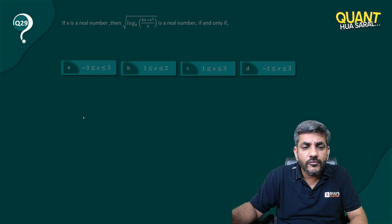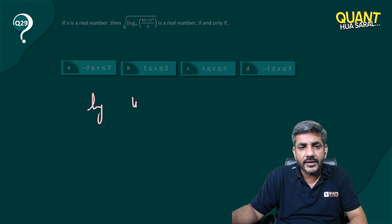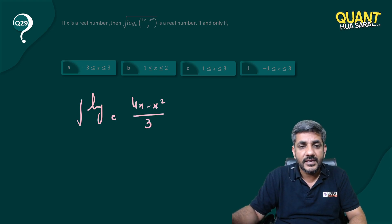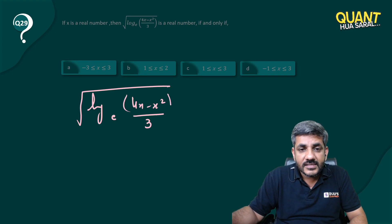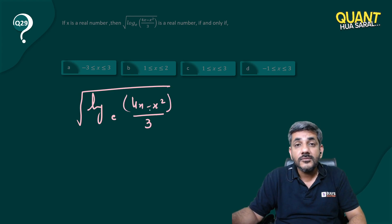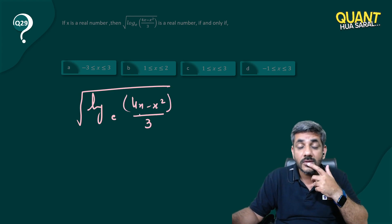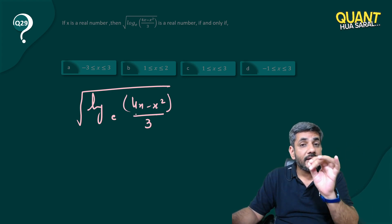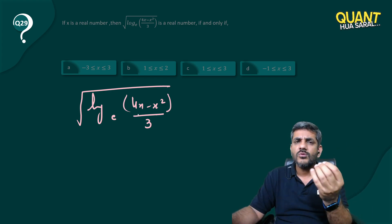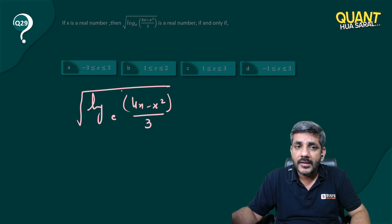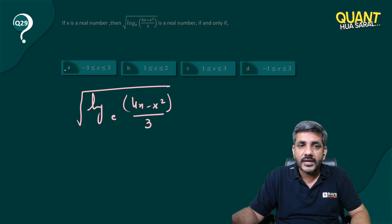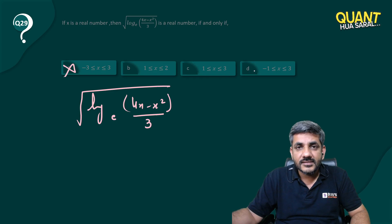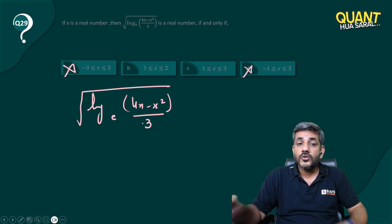Clearly, I can see that the expression is log of (4x minus x squared) divided by 3, with base e. If x is zero, this numerator becomes zero, and you have log of zero — which is not defined. So I cannot take x as zero. Zero is the first thing that comes to mind. Any answer range that includes zero — forget it.